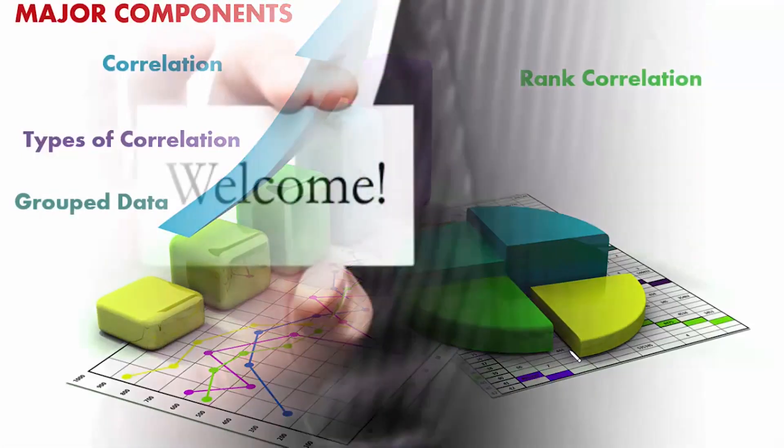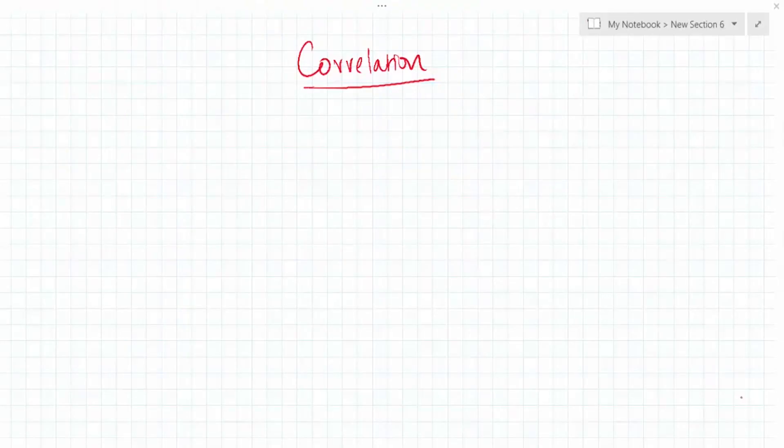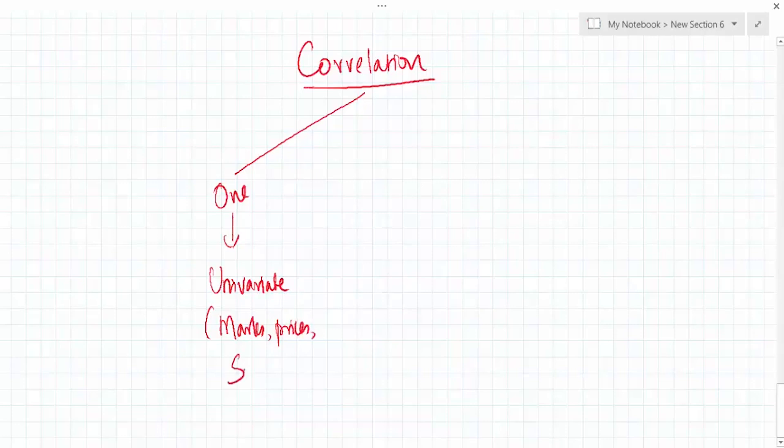Once again, let me welcome you to this course. Let us understand what is correlation in statistics. When we study the characteristics of one variable, that study would be called a univariate analysis. Examples of univariate analysis can be studying marks, prices, or sales.